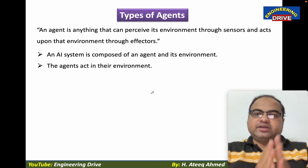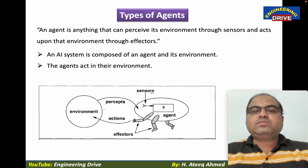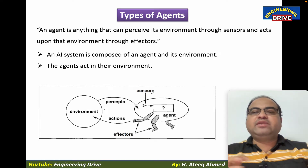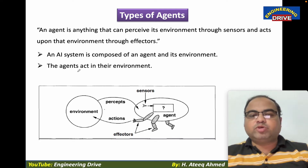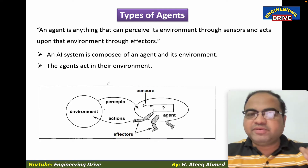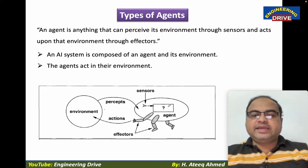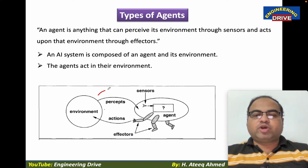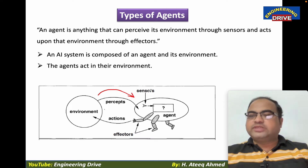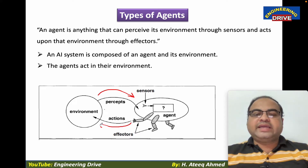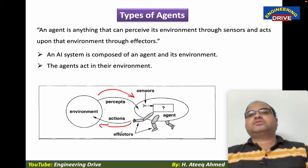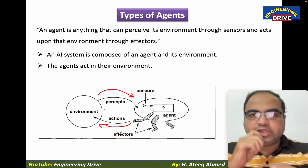Until we complete the syllabus of artificial intelligence, you should have a clear idea about this diagram, which I already explained in my previous sessions. The environment-agent relationship: the agent will take percepts from the environment through sensors, and once it has sensed the environment, the agent will perform actions with the help of effectors.